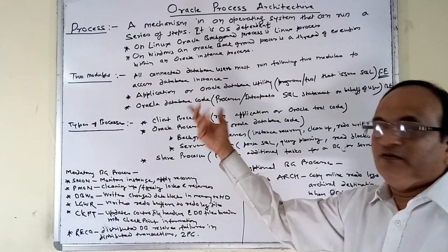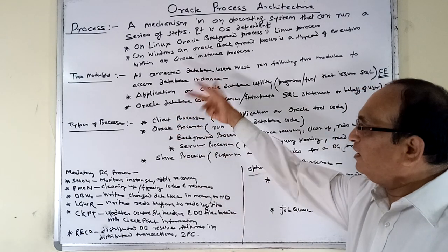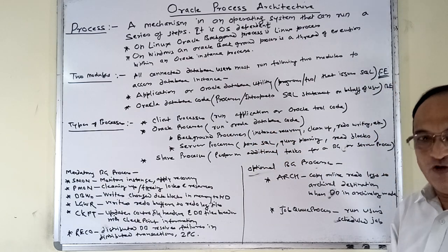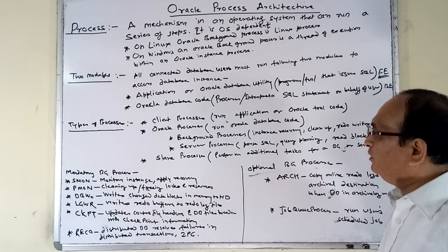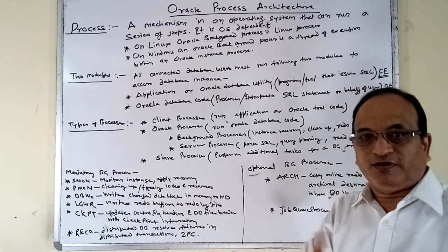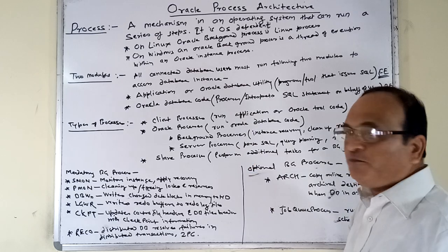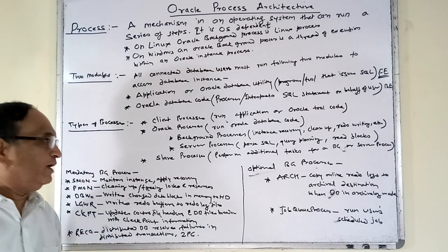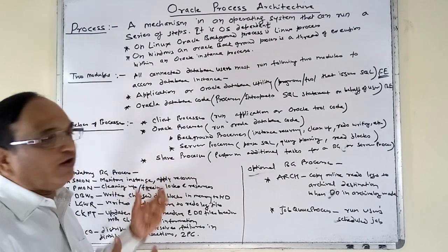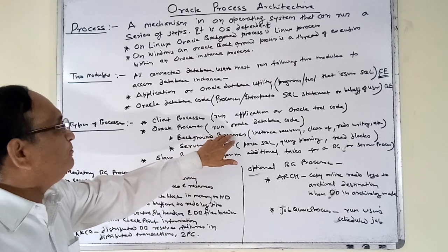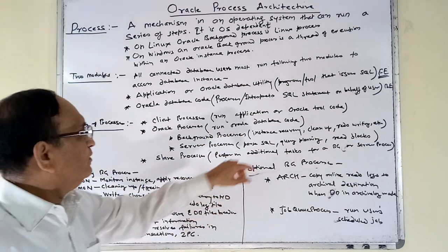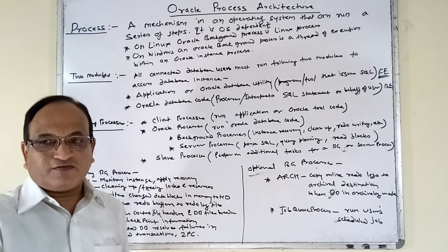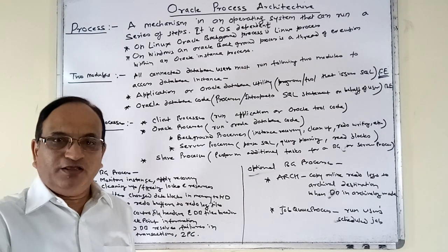The second is the Oracle process, which runs the Oracle database code — it is part of the Oracle system. There are two types: background processes, also called BG processes. Their purposes include instance recovery — if a running database fails and you restart it, automatic recovery can be applied to the Oracle database.